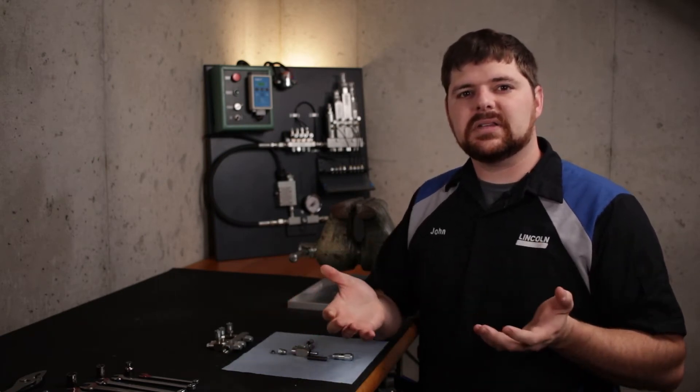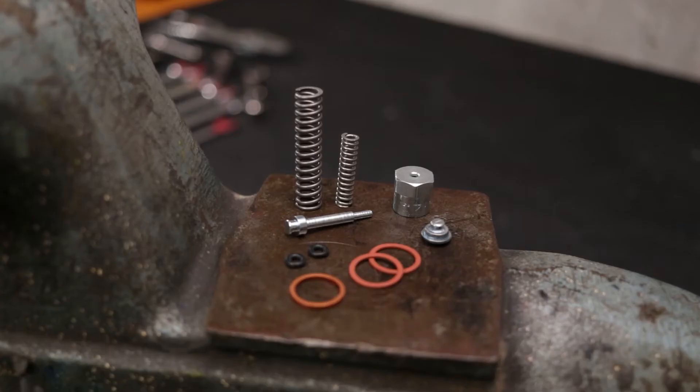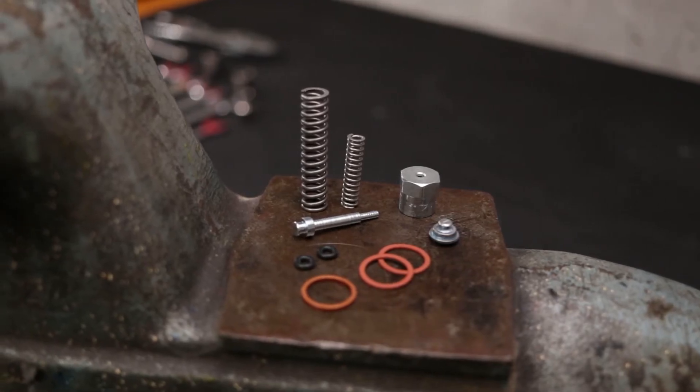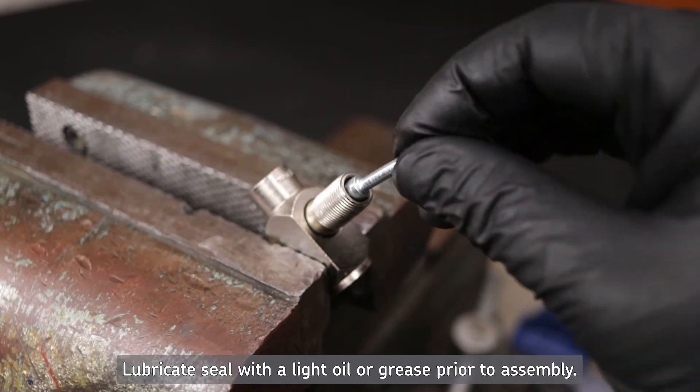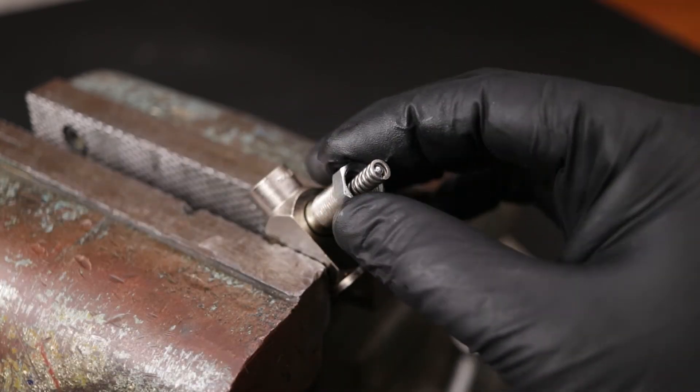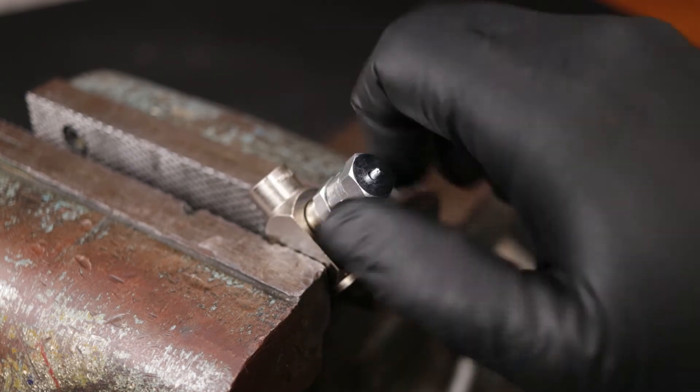Now that the parts have been inspected and found acceptable for a rebuild, let's begin the assembly process with the measuring chamber piston. The repair kit supplies a new piston and seal. Attach the seal to the piston, then press into the measuring chamber. Slide the new spring over the piston, install the lock nut, then install the new injector cap.